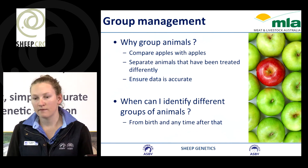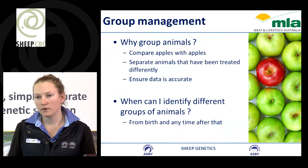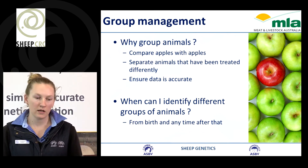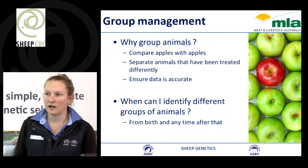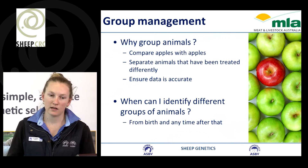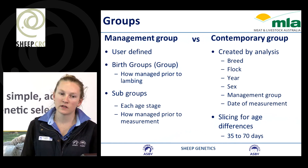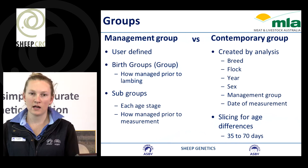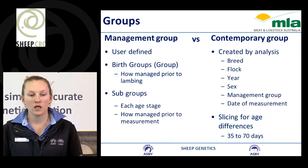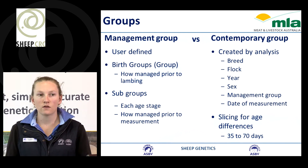When we have management groups on a property, the purpose is to make sure we're comparing apples with apples. If animals have been managed separately, we need to group them into different groups to ensure data accuracy and that we're effectively comparing the right animals. Every animal will be given a group at birth, and if we separate those animals over time, they'll be given a subgroup. A management group is defined by the user from birth onwards. A contemporary group, however, is what we assign in the analysis — we make further adjustments to ensure all animals are compared in the right contemporary group.